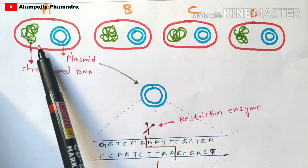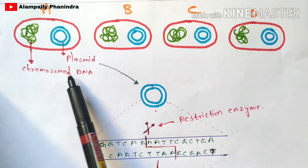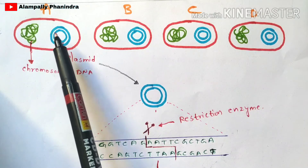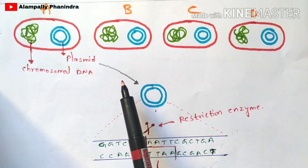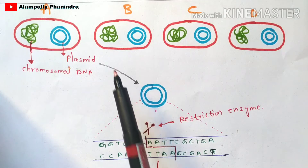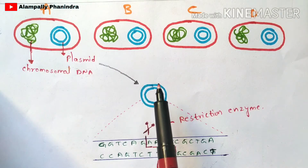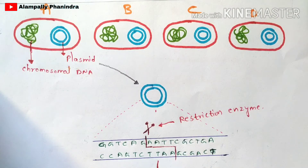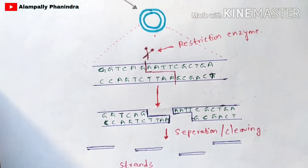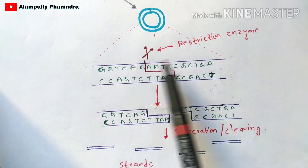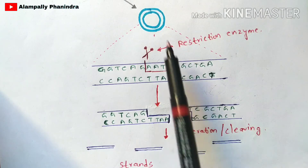In the Southern blotting technique, there is no use of chromosomal DNA — only the plasmid is used. The plasmid from the bacterium will be extracted using micro syringes or similar tools. This plasmid consists of DNA sequences inside it. Let us assume this is the DNA sequence present in the plasmid DNA.